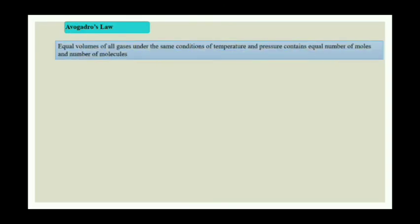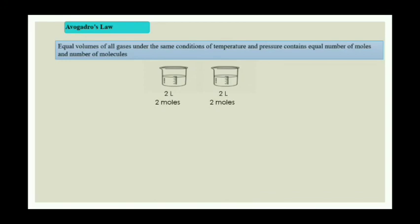Now we discuss Avogadro's law, the last of the gas laws. It states that equal volumes of all gases under the same conditions of temperature and pressure contain equal number of moles and molecules. So if temperature and pressure are constant, equal volumes contain equal number of molecules. For example, two beakers each with 2 liters of gas at the same temperature and pressure: if one has 2 moles, the second also has 2 moles. This is Avogadro's law.